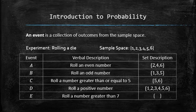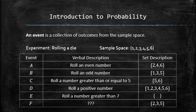However, the majority of events will not have such nice verbal description. There are altogether 64 events that can be defined from the sample space of size six. Most of them will not have an intuitive verbal description. For example, try to come up with a verbal description for this event.